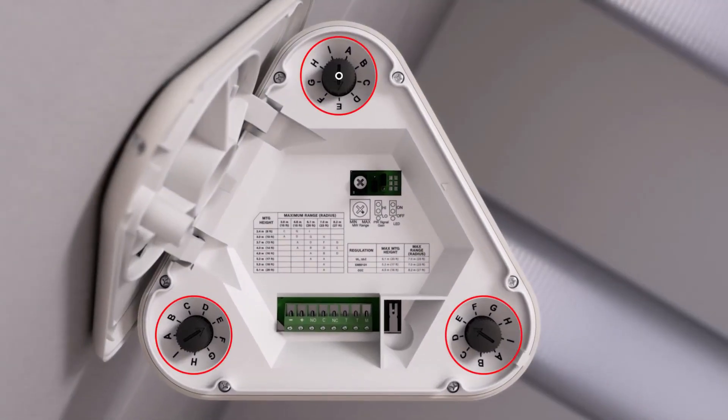They have nine lettered settings which determine the size of the radius of each zone. By turning the knob, you are vertically adjusting the lens.